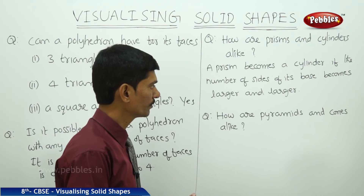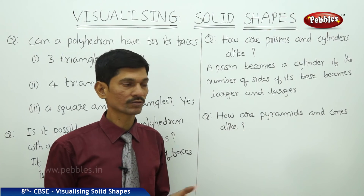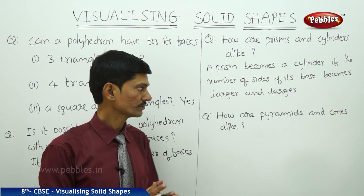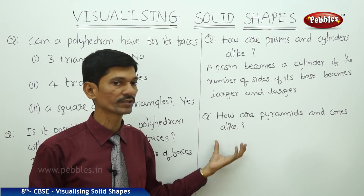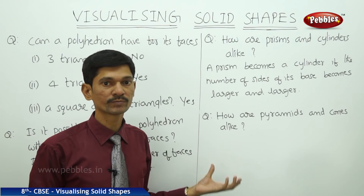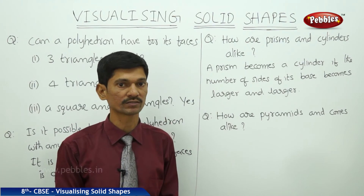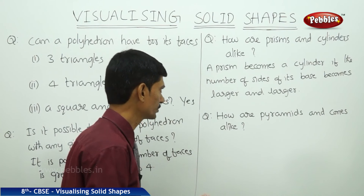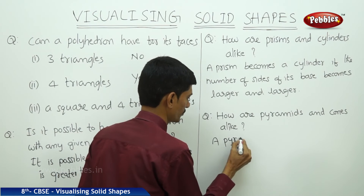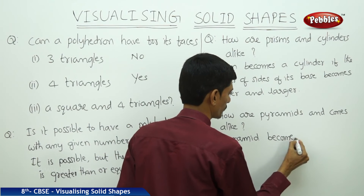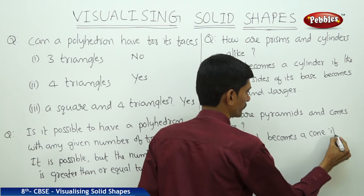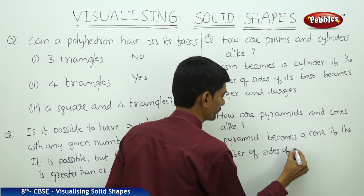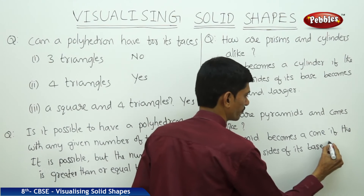How are pyramids and cones alike? A pyramid has triangular lateral faces, but a cone's lateral face is a curved face. The pyramid may be triangular, square, or pentagonal depending on the base. If you increase the number of sides of the base of a pyramid indefinitely, then the pyramid becomes a cone.